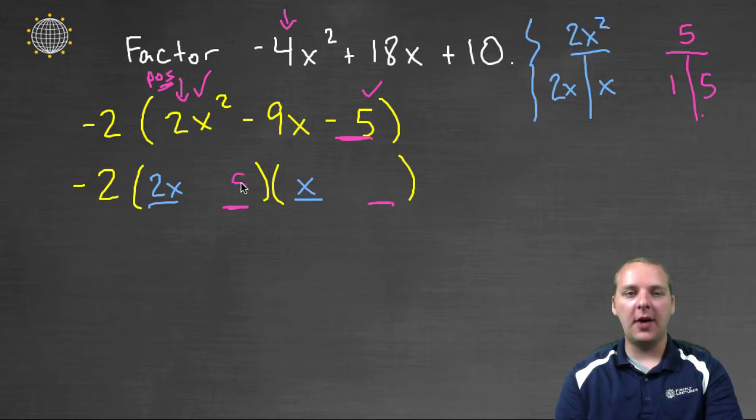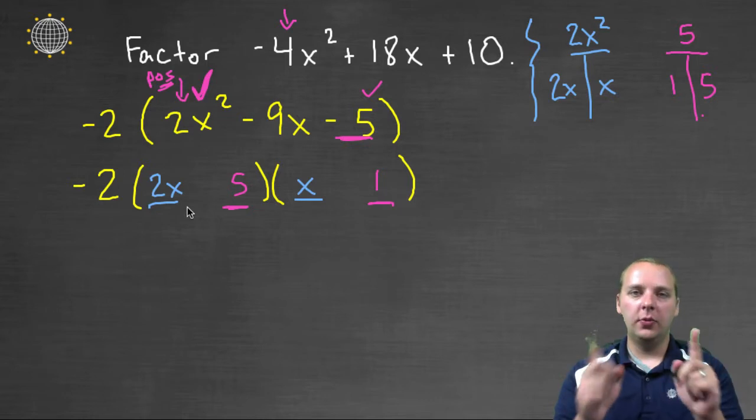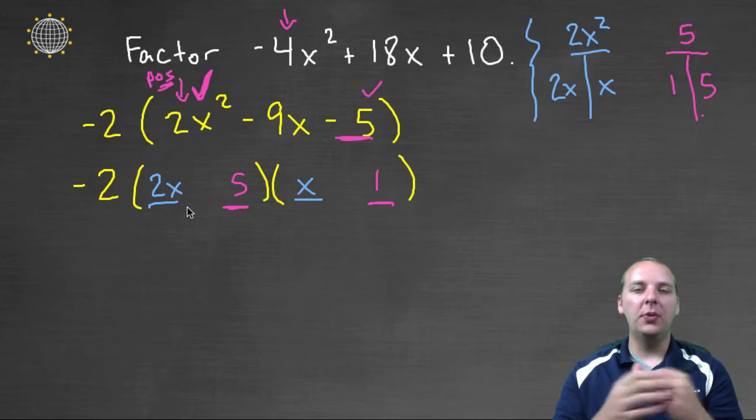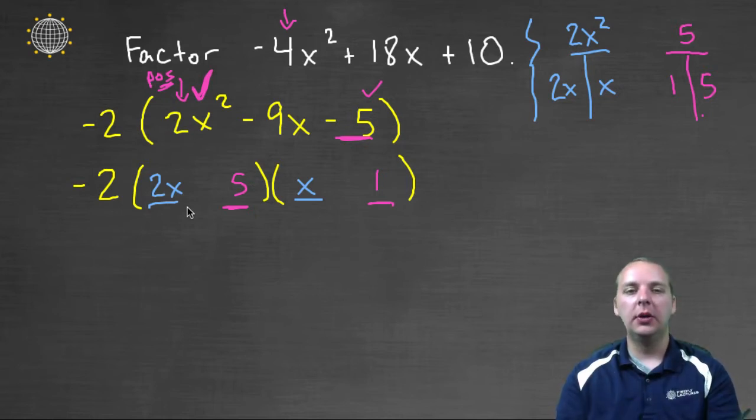Alright, we'll try a 5 and a 1 first. So 2x times x would give us 2x². That looks great. The outer would be 2x. The inner would be 5x. But here's the problem. 2x and 5x, if the signs could be anything they wanted to be, there's no way you could get a -9x. That's just not possible. So that can't be the right factorization.